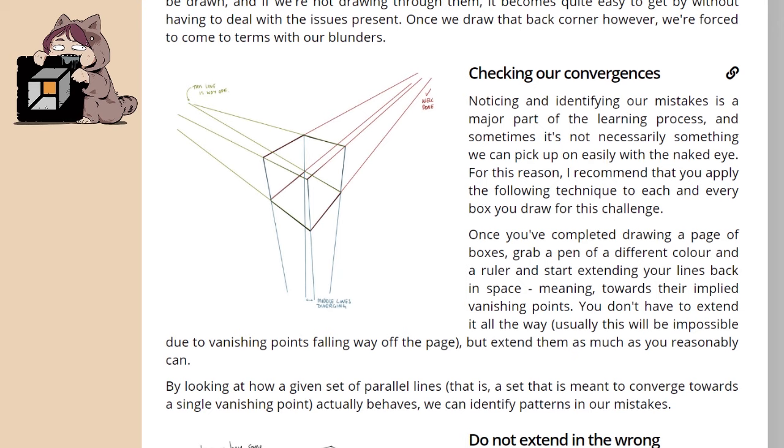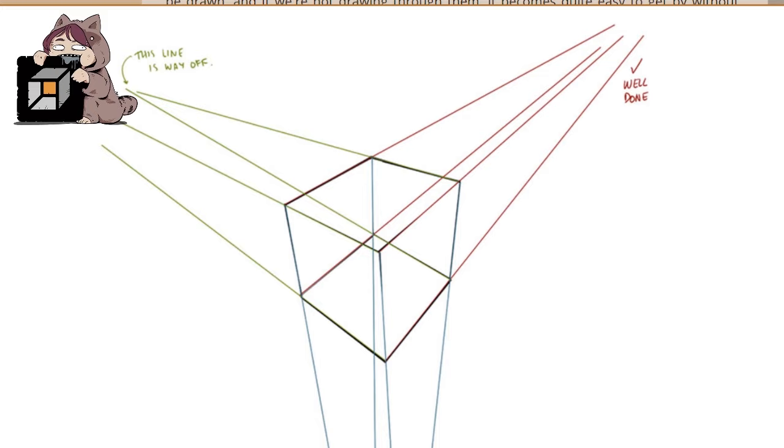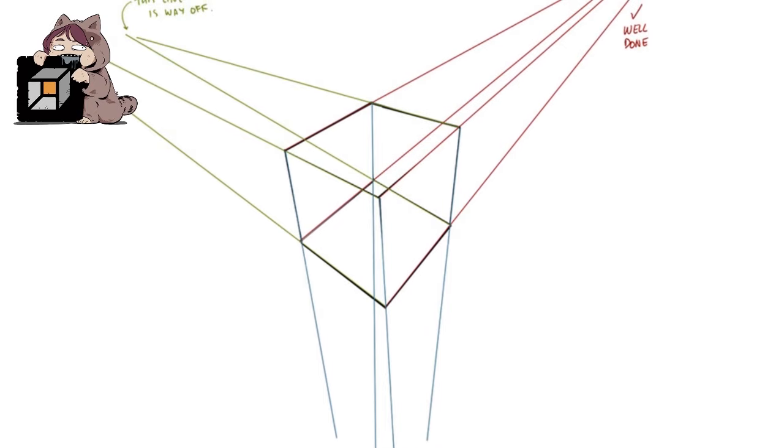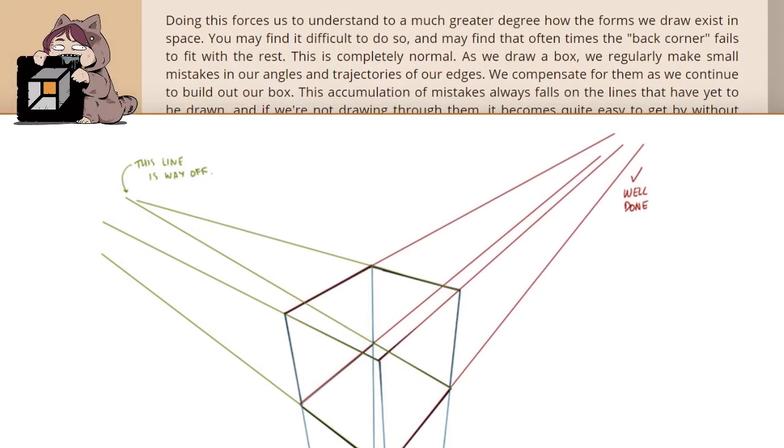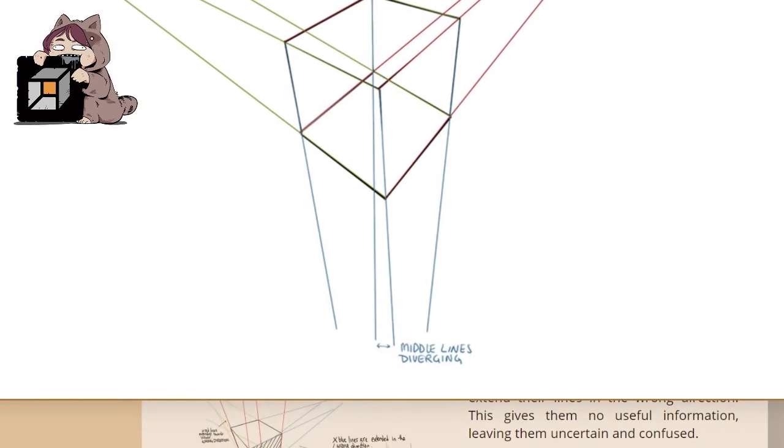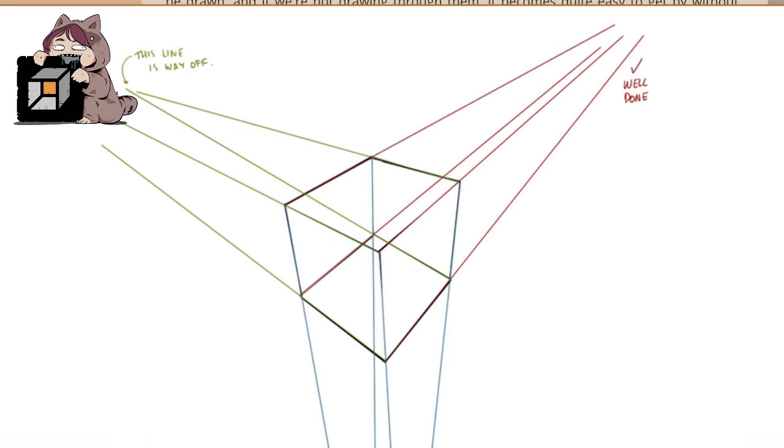By looking at how a given set of parallel lines - that is, a set meant to converge towards a single vanishing point - actually behaves, we can identify patterns in our mistakes. So here, the lines don't actually go out all the way to their vanishing point, just enough to where you can see if you've made a horrible mistake. You can see in the notes: the green one has a line that's way off, the red one's pretty good. This blue one down here - the middle lines are actually diverging instead of converging. So all your lines should be converging to the same vanishing point.